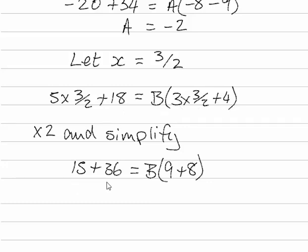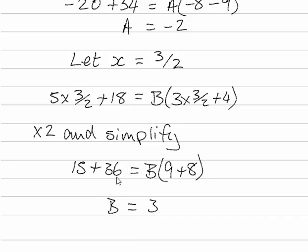So we're going to get 15 plus 36 is equal to B times 9 plus 8. 15 plus 36 is 51. 9 plus 8 is 17. 51 divided by 17 is 3. So B is equal to 3.